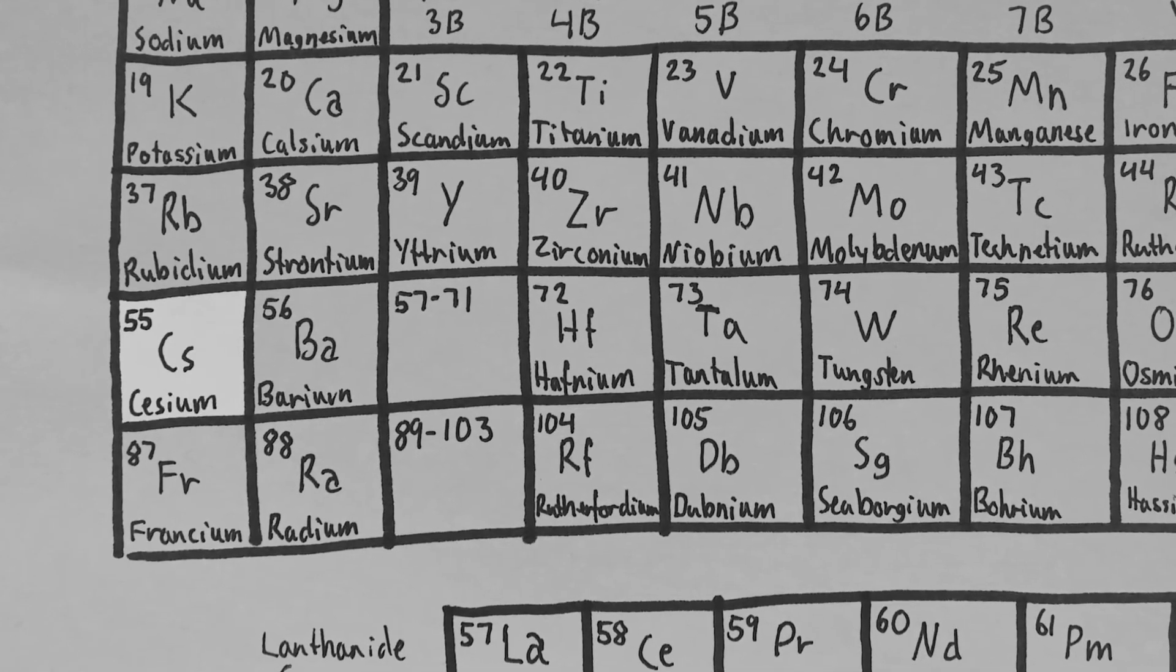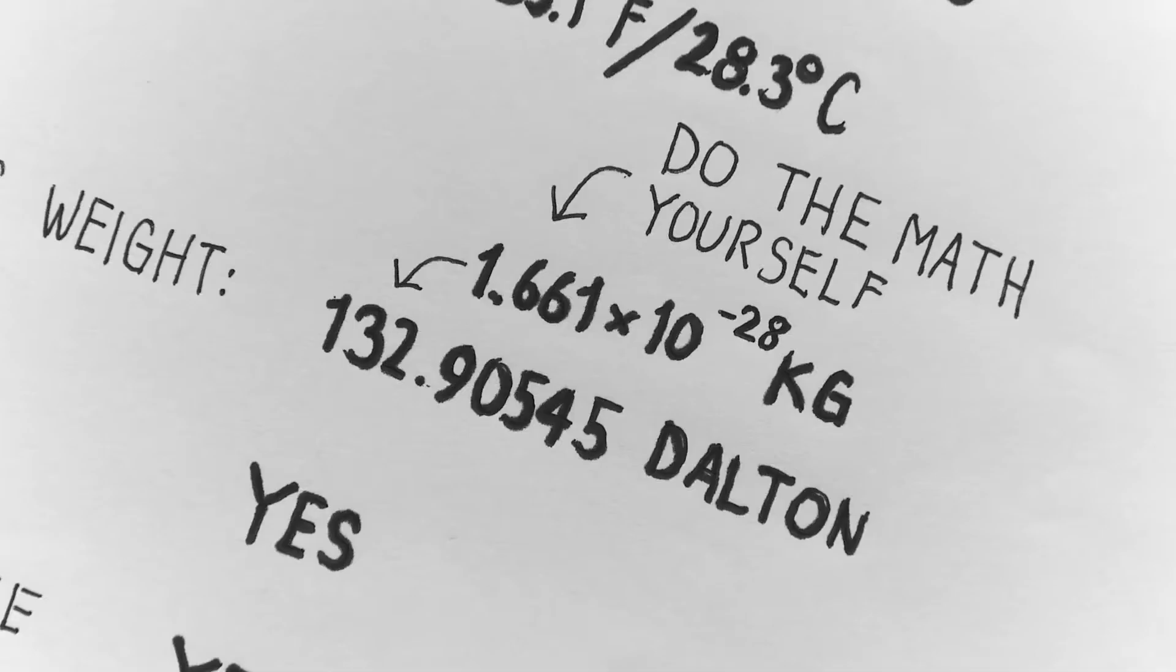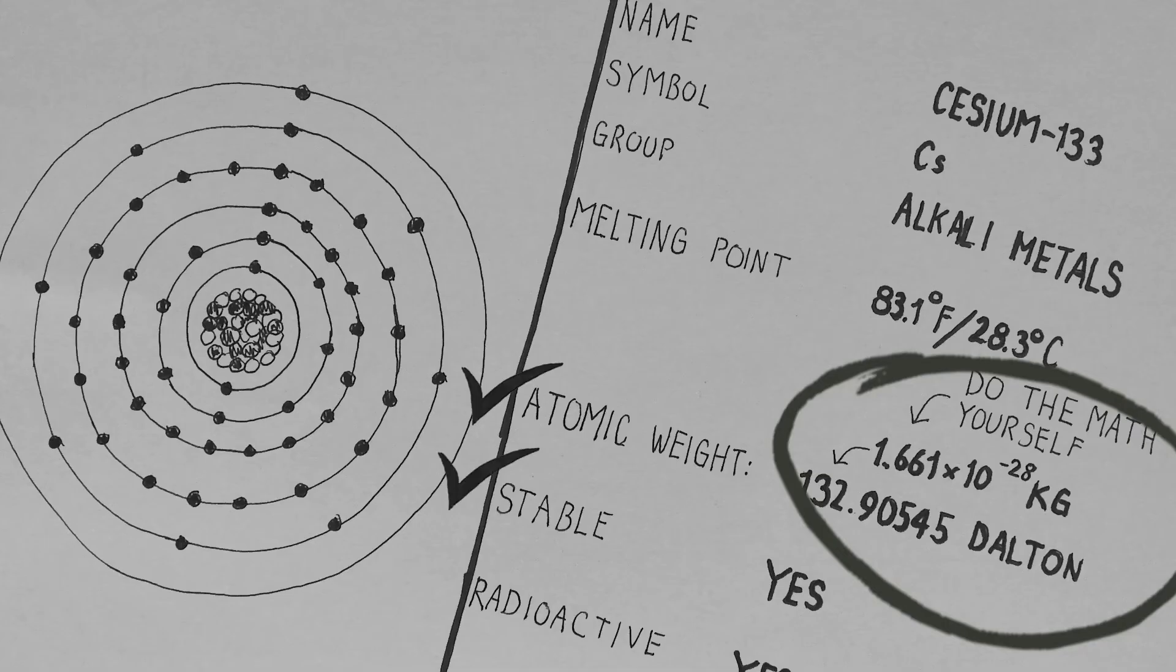In atomic clocks, cesium-133 is the standard because it's heavy, at least for an atom. Stable, it's easy to melt, and its outermost electron is alone, which for all intents and purposes is the only one interacting with the nucleus.